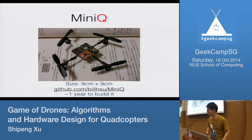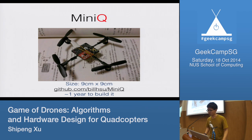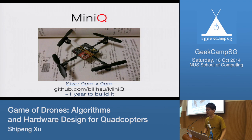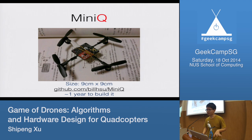This is a picture of the quadcopter I built. I call it Mini-Q because it's quite small — 9cm by 9cm. It's completely open source, so you can find the design from the GitHub repo. I designed the PCB, sent the design to the factory, they manufactured it, and then I programmed the control algorithms. It took around a year to build, but after this talk you'll have a better understanding of how to design a quadcopter yourself in much less time.